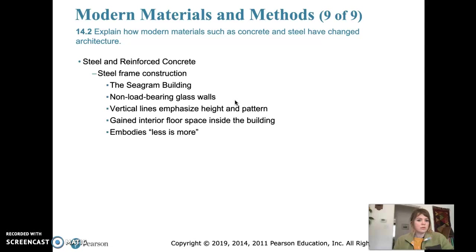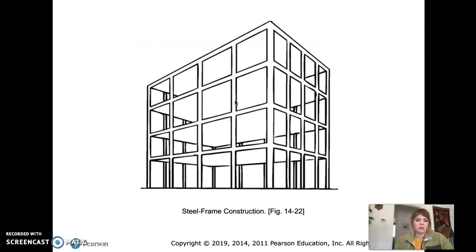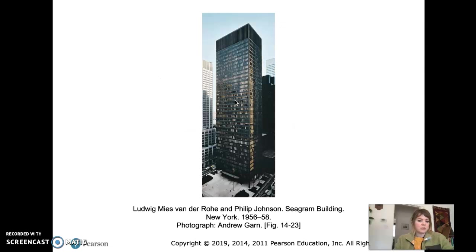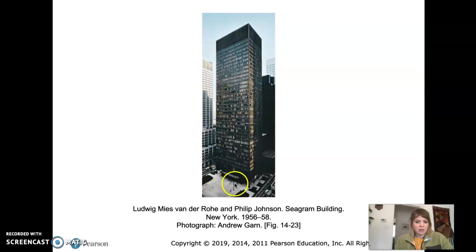We'll move on to steel frame construction and take a look at the Seagram Building. Here's a building that uses steel frame construction — this is the Seagram Building in New York. It was built in 1956 through 1958 and uses steel frame construction. It was an office space, and as you can see it has a lot of height. The base features an open public area where people can gather, and there are a lot of vertical lines in the building which emphasize the height.